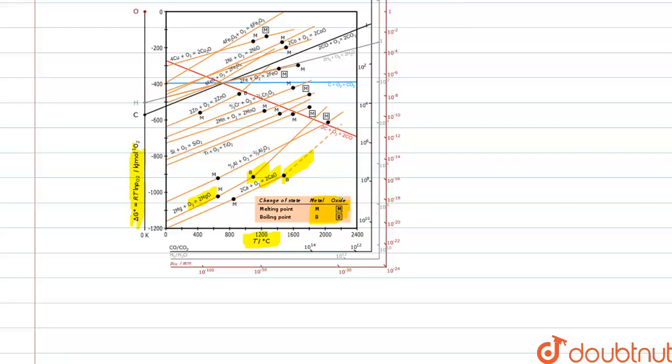So we can say that the bend in the graph indicates the melting point and boiling point of oxides.